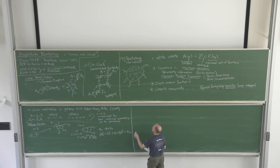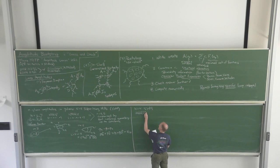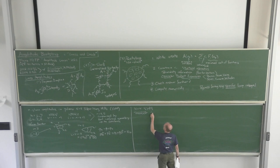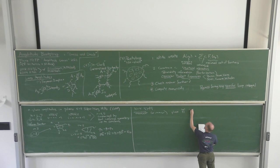Let's write down the particle content of N=4 super Yang-Mills theory. It has a gluon with helicity plus or minus one, carrying an adjoint color index. It also has a fermion — called a gluino — with helicity plus or minus one-half; there are four of them, also in the adjoint. And there are scalars: six real scalars with helicity zero, also in the adjoint.